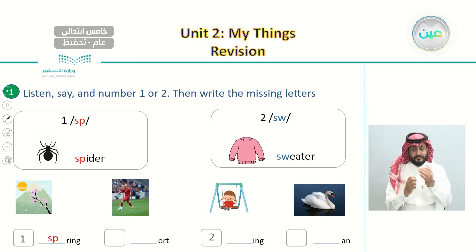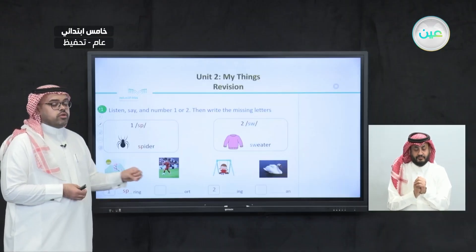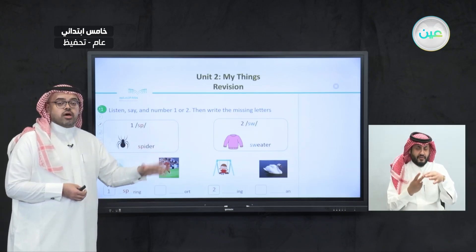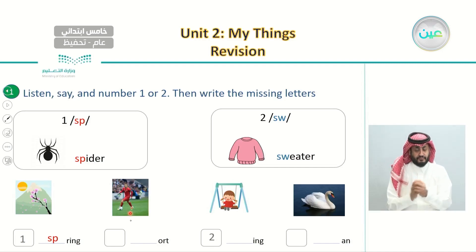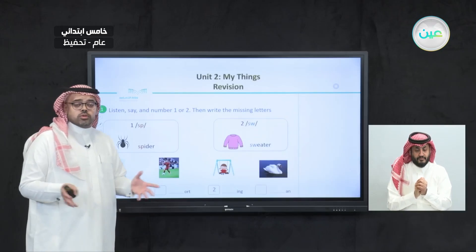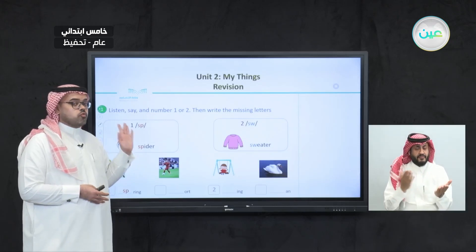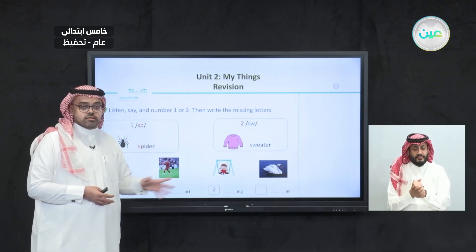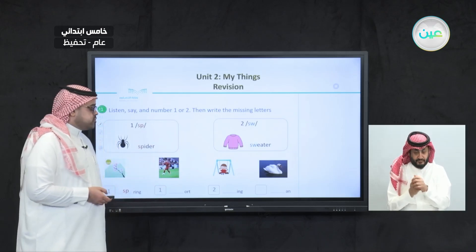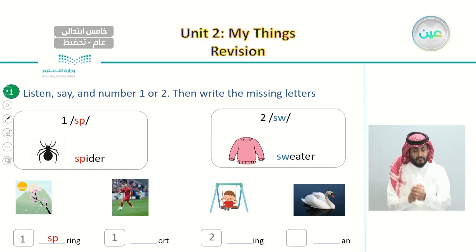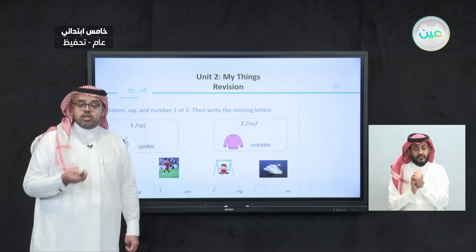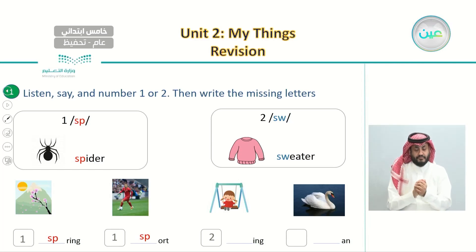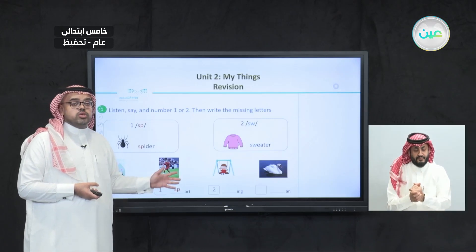Now let's listen to the second word. We'll decide whether it has the first or the second sound and then write the missing letters. The second word is sport. Does sport belong to the first sound or the second sound? It belongs to the first sound that starts with SP. So we fill it in with SP. Here is our second word: sport.